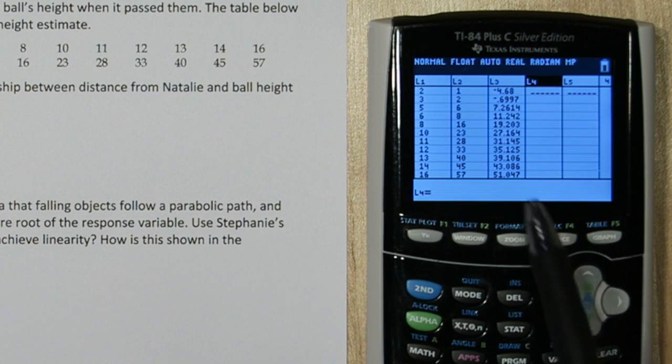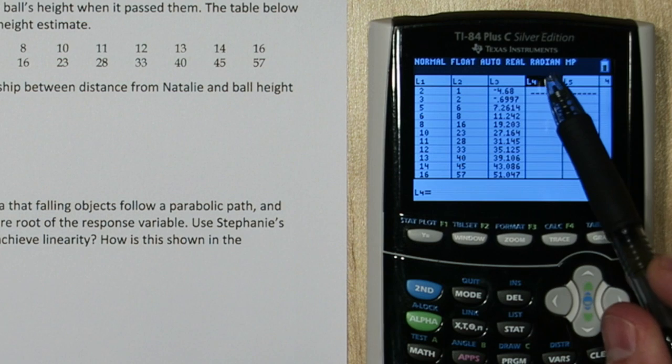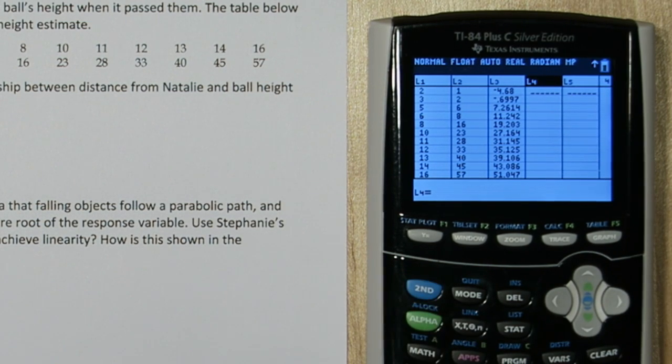So the residuals are the observed heights minus the expected heights. So I went over to list 4 and pressed up, and I'm going to say take list 2, 2nd 2, and subtract list 3, 2nd 3.